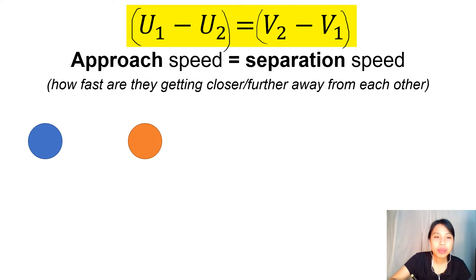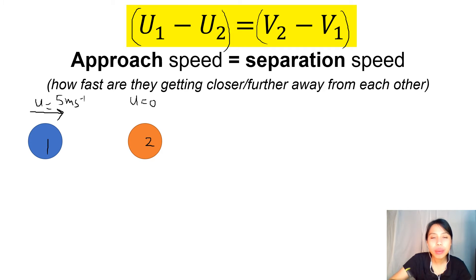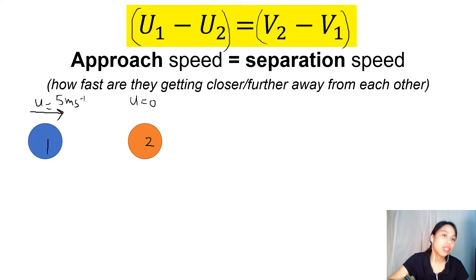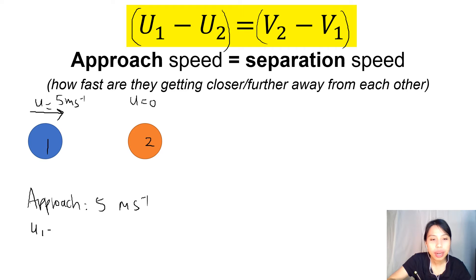Let's say you have two objects. Object one is rolling at five meters per second. Object two is just sitting at rest. Without thinking about the formula, how fast are these two getting closer to each other? Five — because one's not moving. So they're getting closer at five meters per second. Using the formula: U1 minus U2 = five minus zero = five. The same thing.